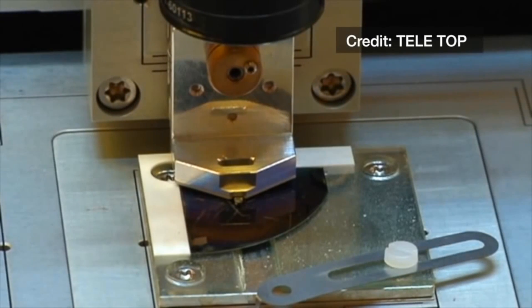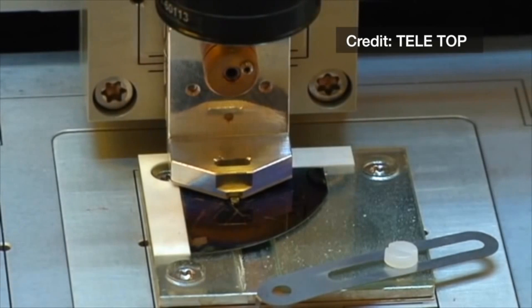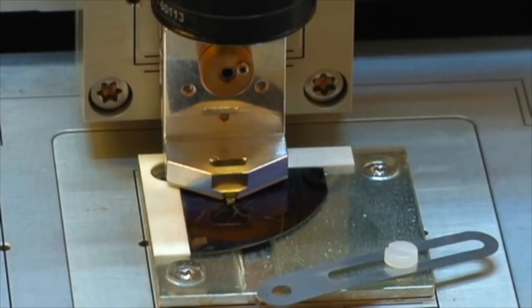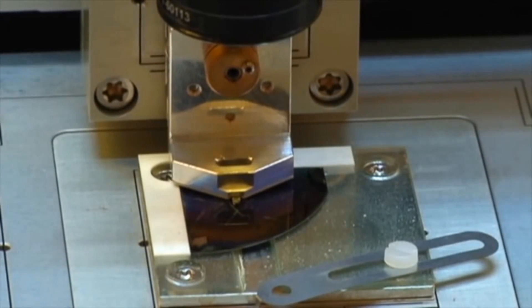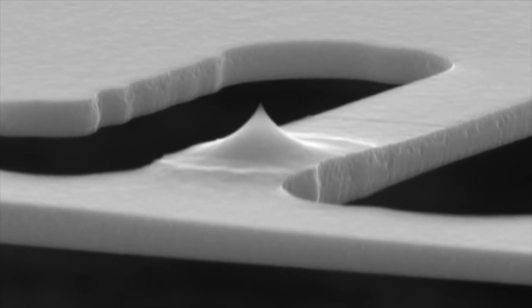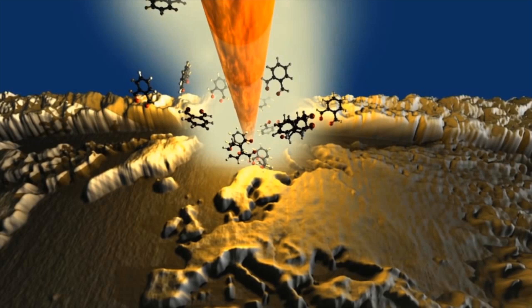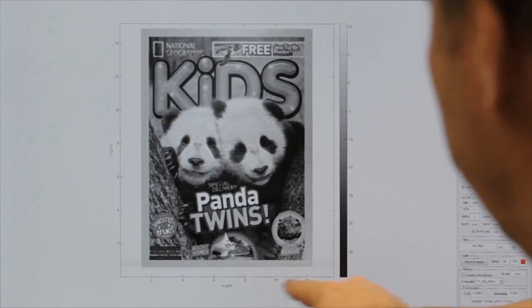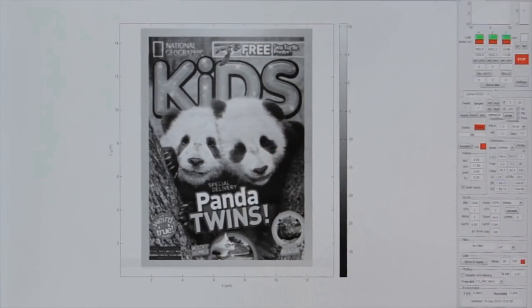To achieve this, IBM scientists have invented a tiny chisel made of silicon with a sharp apex which can be heated. This chisel is a hundred thousand times smaller than a pencil point, and like a 3D printer, the apex can evaporate material to create patterns and structures like the cover of National Geographic Kids.